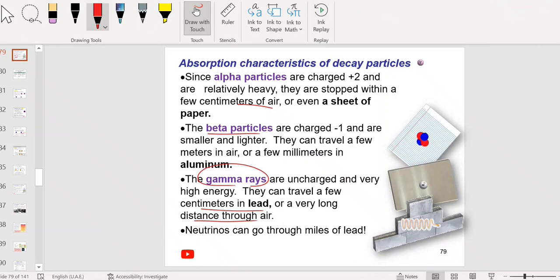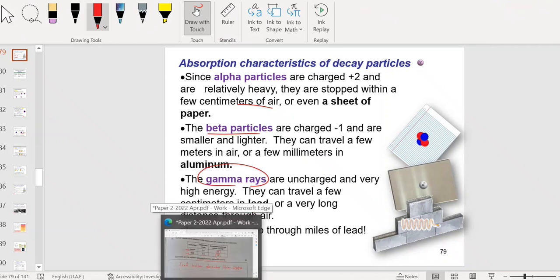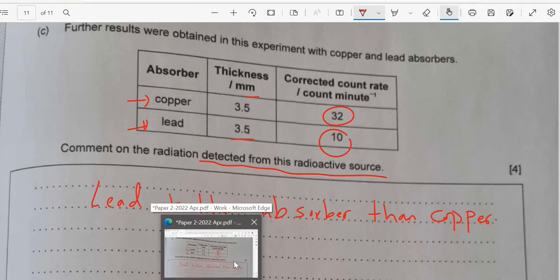While alpha particle it will be stopped, doesn't go through the aluminium foil. Doesn't go or it will go a few centimeter in the aluminium foil and then it will be stopped.